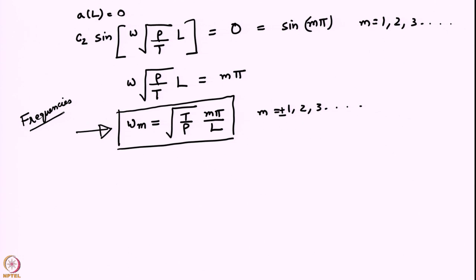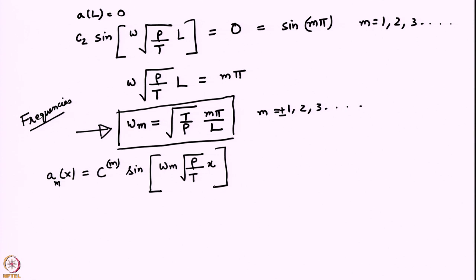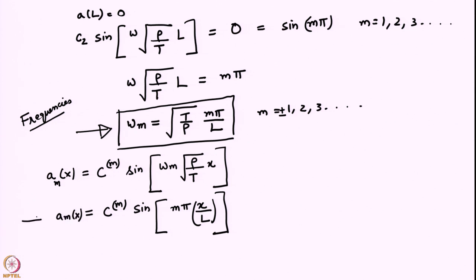What do the eigenfunctions look like? The eigenfunction is dependent on m, so I am going to put a discrete index m on the eigenfunction corresponding to eigenvalue omega_m. This is given by some constant times sin, because only the sin part appears in the eigenfunction — the cosine part dropped out because of the boundary condition. Substituting omega_m, we obtain sin of m pi x over L. Here m goes from 1, 2, 3 up to infinity.